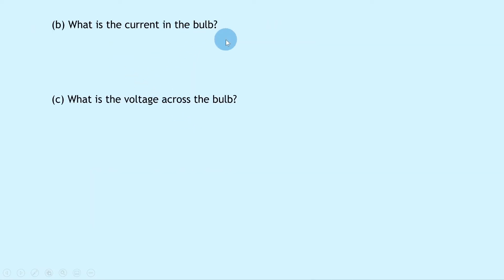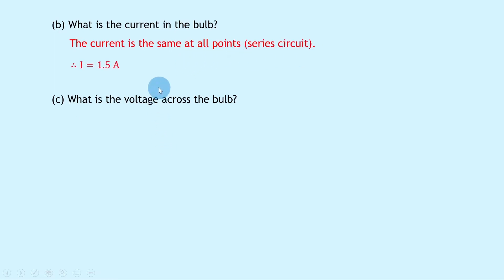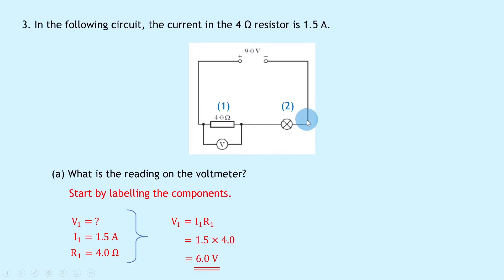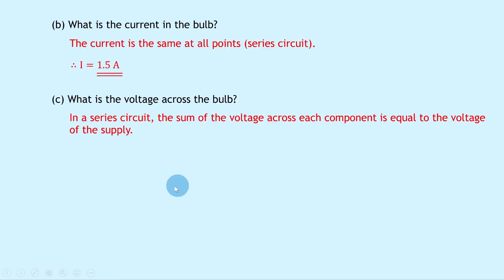Part B asks for the current in the bulb. Since current is the same at all points in a series circuit, the current in the bulb is 1.5 amps. Part C asks for the voltage across the bulb. Using the series circuit rule — the sum of voltages across components equals the supply voltage — V2 equals VS minus V1, which is 9 minus 6, giving 3.0 volts.